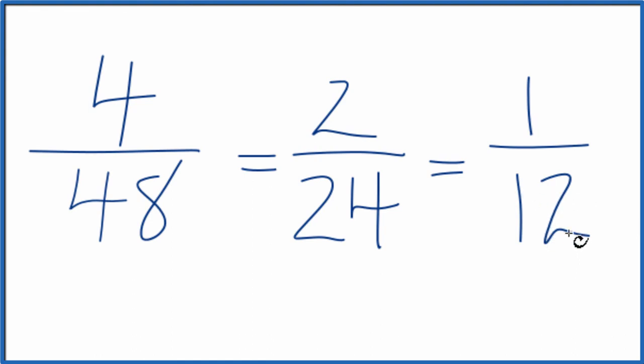That's the same answer we got before. These are all equivalent fractions. They have the same value. If you divided 4 by 48, 2 by 24, or 1 by 12, you'd get the same number.